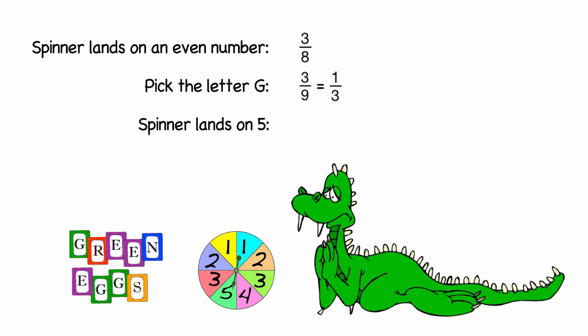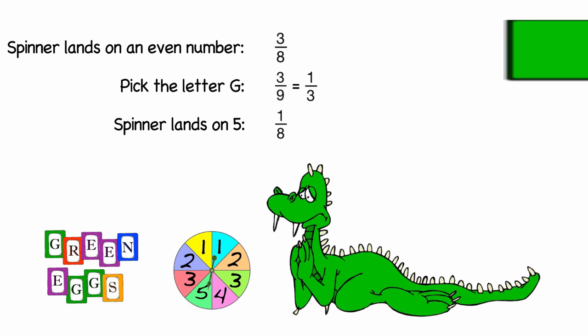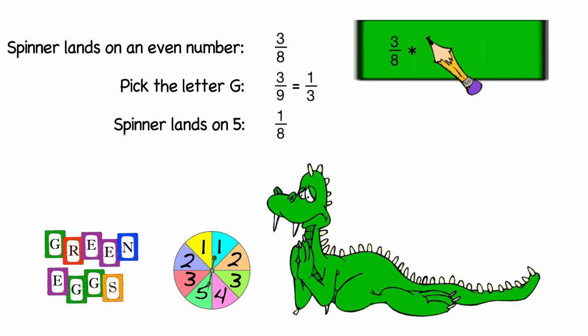Going back to the spinner, I see there's only 1 five on it. So the probability of picking a 5 is 1 out of 8. So to find the probability of all 3 events happening, I'm going to be multiplying those together. I get 3 eighths times 1 third times 1 eighth. Simplifying my answer, I get 1 in 64 chance that those 3 events will occur.